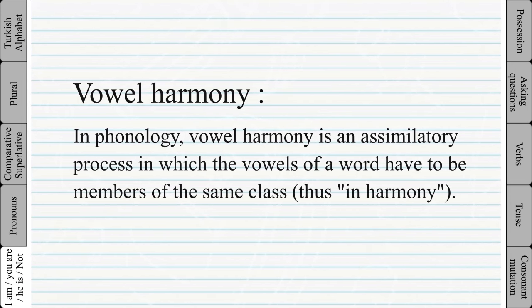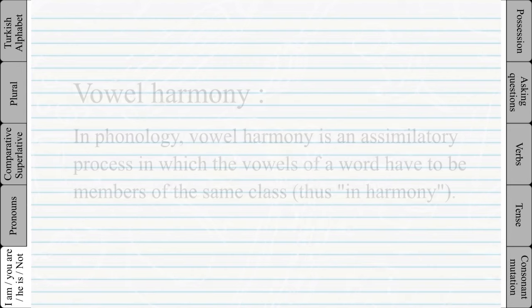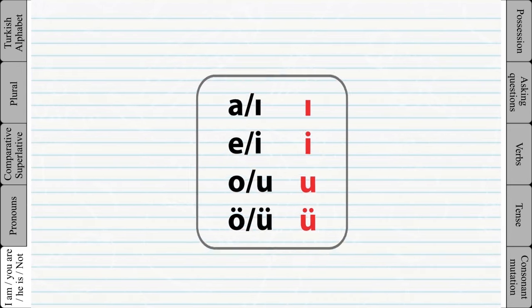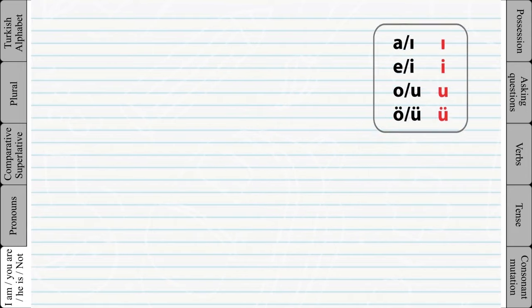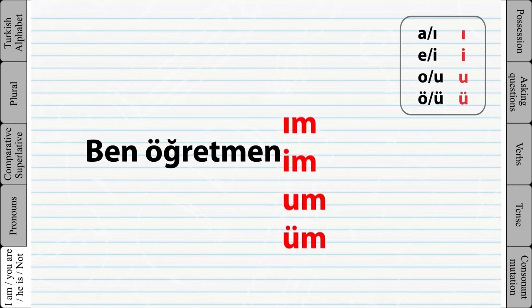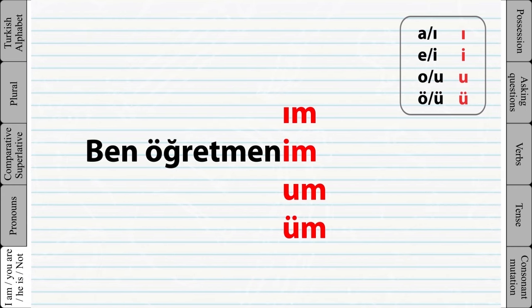Thus, in harmony, the rules are like this. Let's look at this example: because the last vowel of this word is 'e', that's why we have to use the 'im' ending.